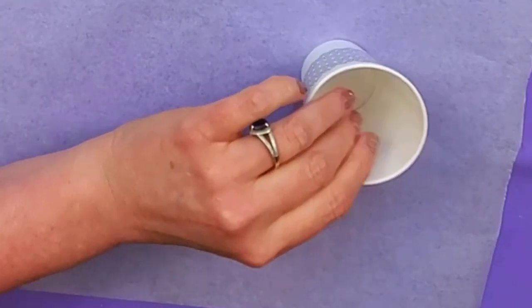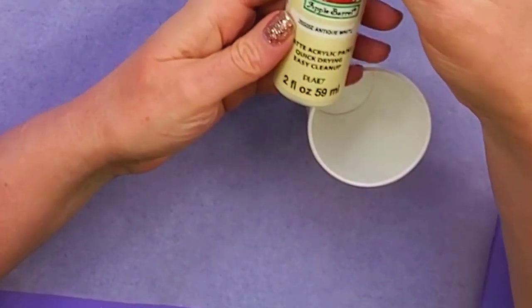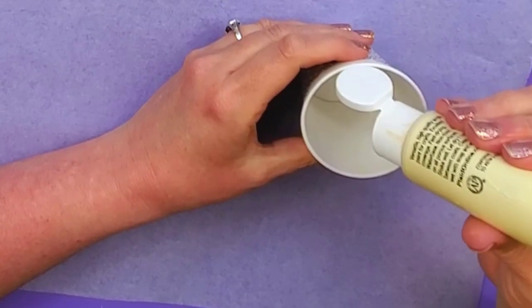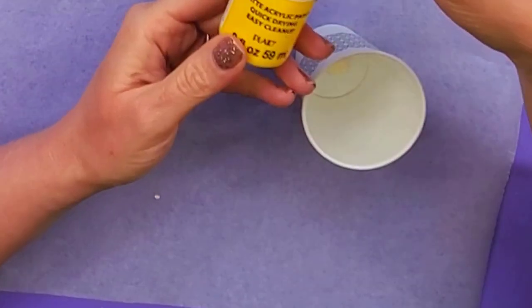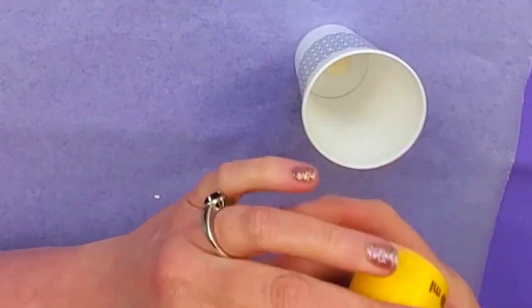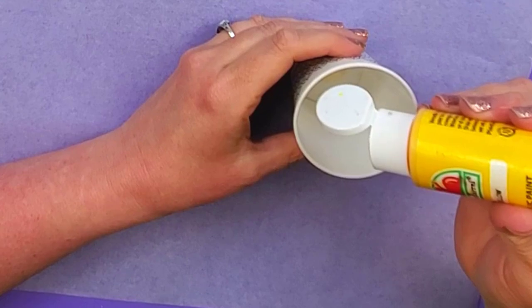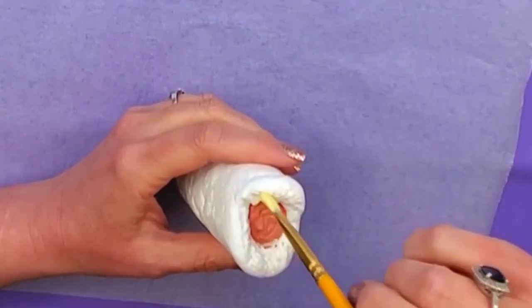And then for the corn part here, I'm gonna use antique white and then just a touch of yellow. And then just brush that on.